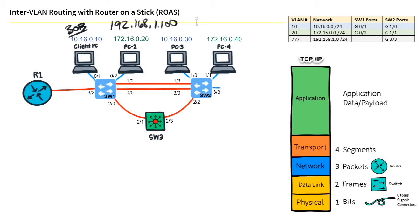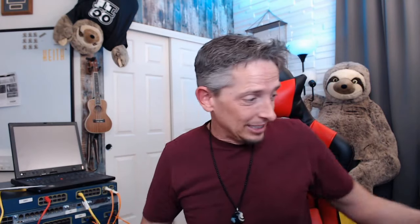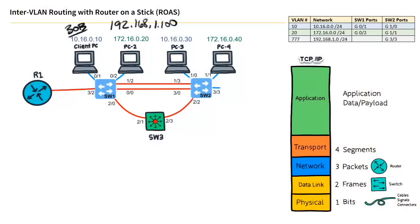Behind the scenes, Bob's computer knows that when he puts in an IP address in his browser, he wants to access a web service. In the TCP/IP protocol stack, the popular protocol to deliver and request that type of service is HTTP - that's the application layer. In the background, Bob's computer formats the correct HTTP application layer request.